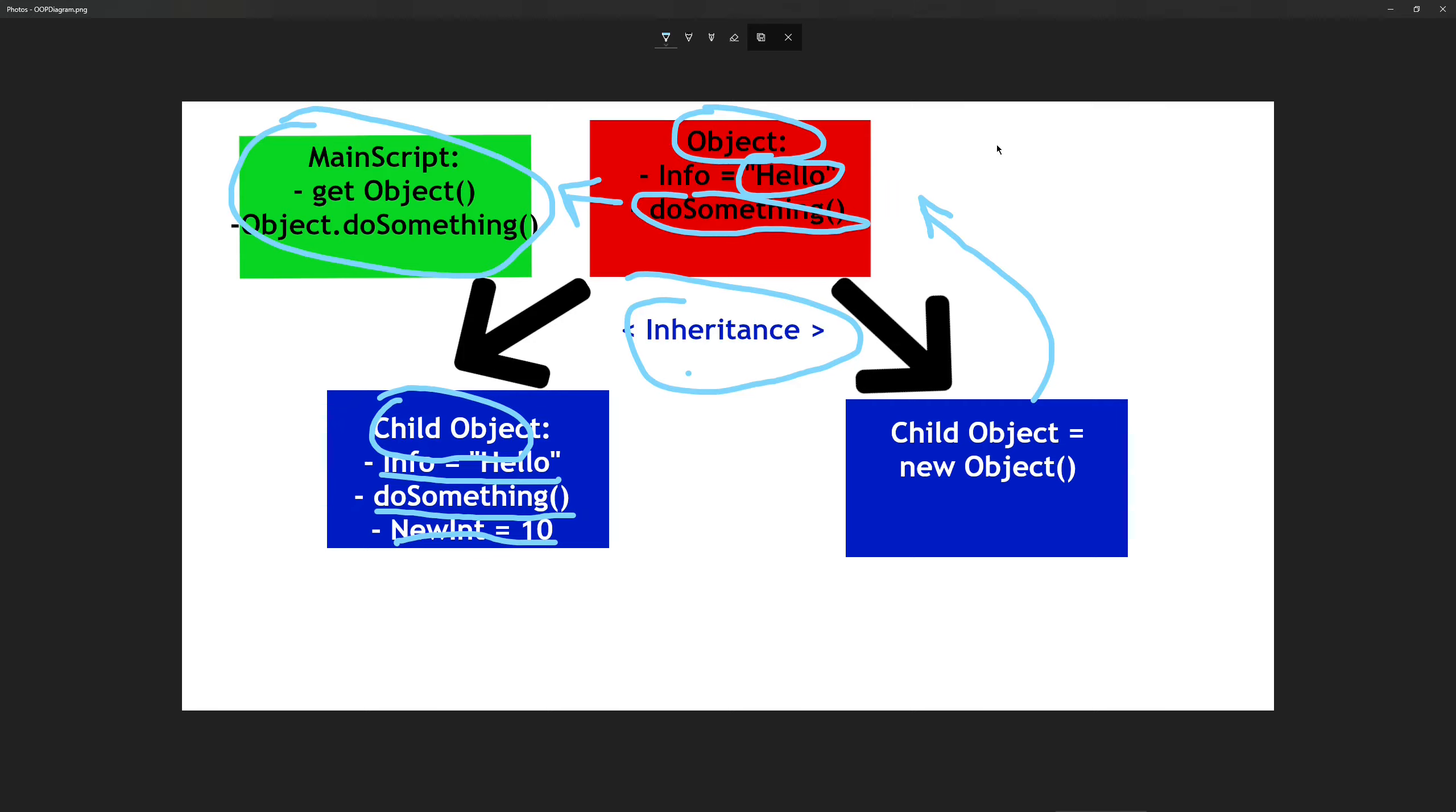And this is very useful in Roblox. Some examples are things like enemies, because you would have one base class called enemies and maybe a child like a zombie or a skeleton.